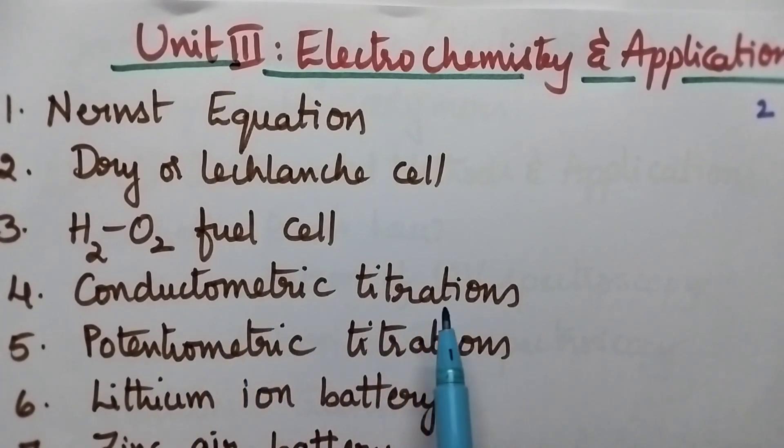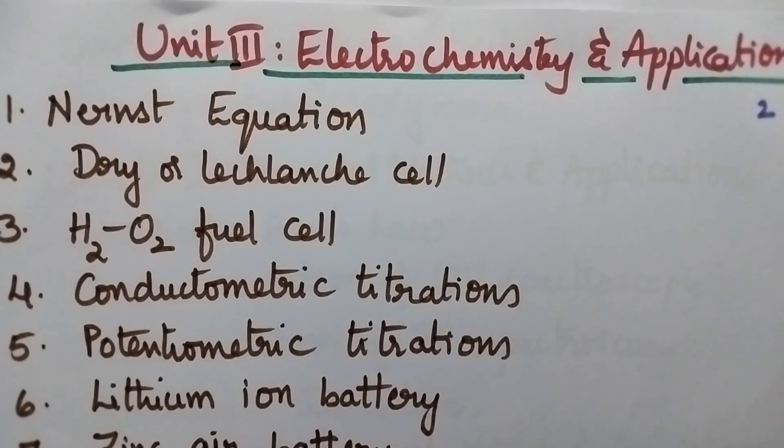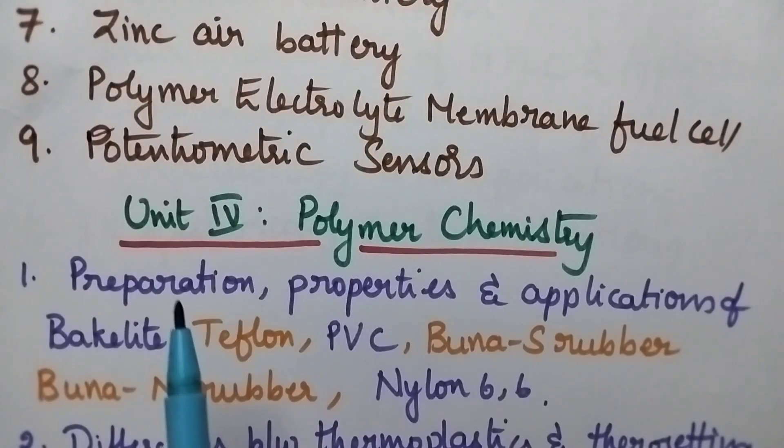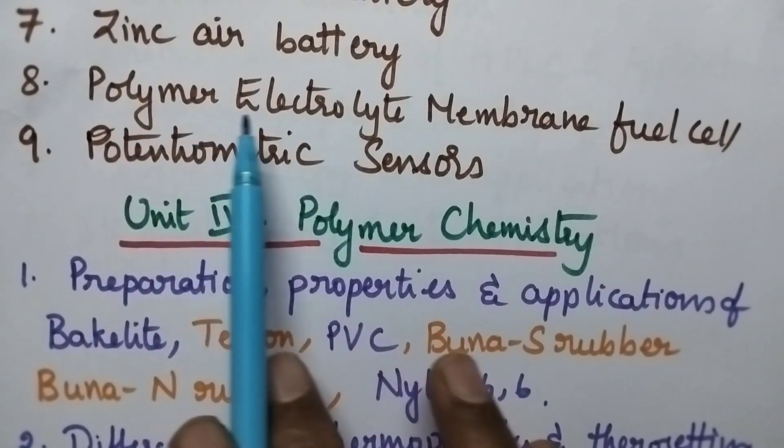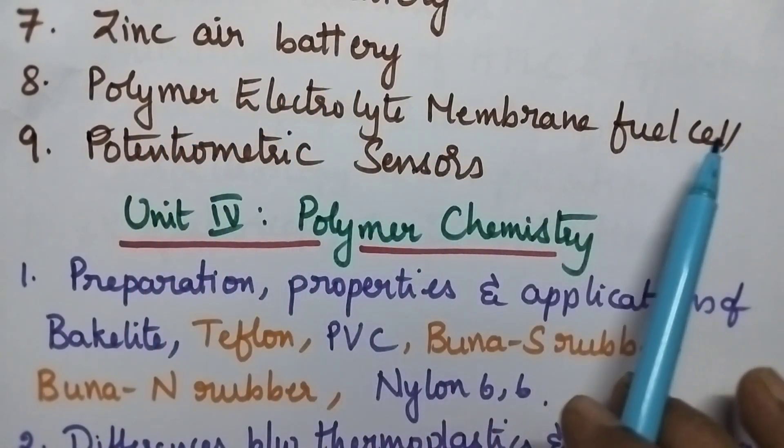Fourth question is conductometric titrations. Fifth question is potentiometric titrations. Sixth question is lithium ion battery. Seventh question is zinc air battery. Eighth question is polymer electrolyte membrane fuel cell. And ninth question is potentiometric sensors.